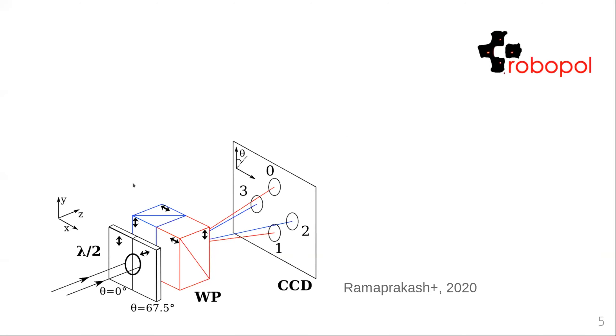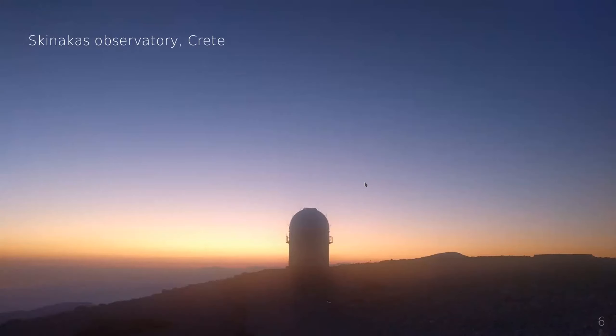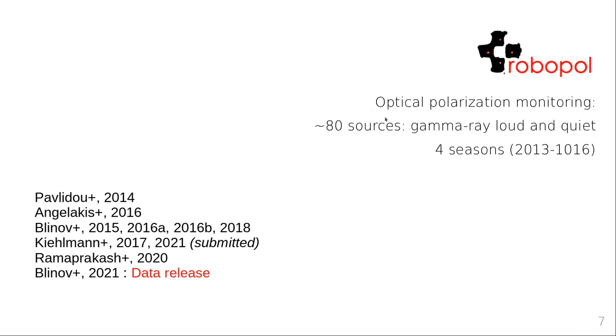For that, the RoboPol collaboration built a new instrument which splits a beam into four separate beams. Through differencing, you can directly measure the linear polarization in a single exposure. The whole instrument is explained in this instrumentation paper. This instrument was mounted at the Skinakas observatory in Crete. With this new instrument, we observed a sample of 80 sources, most of them gamma ray loud, so detected by Fermi LAT, and a control sample of gamma ray quiet sources for four seasons. We published a series of papers on this subject matter with recently a data release of the full RoboPol AGN monitoring campaign data.